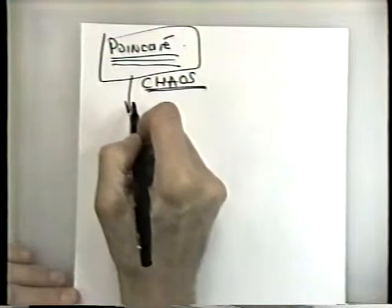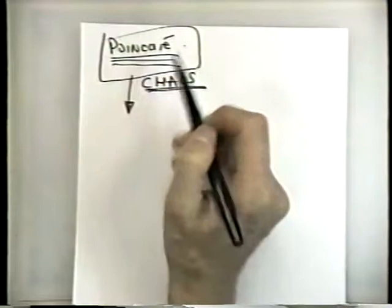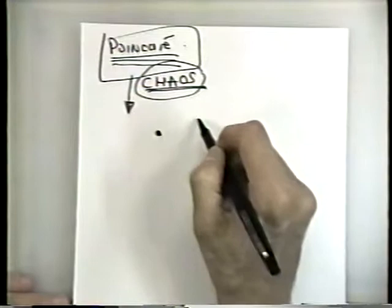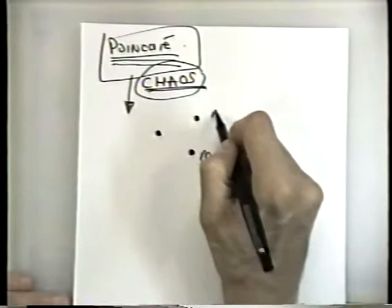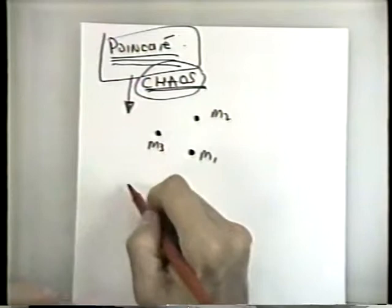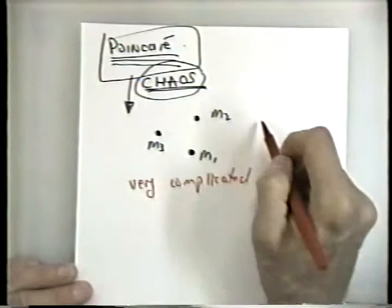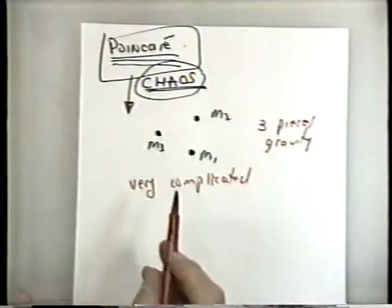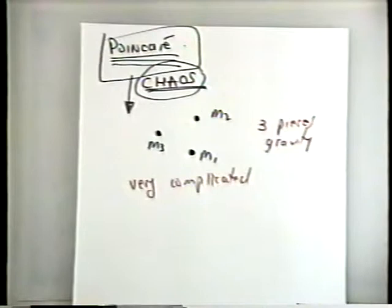What we're going to describe are some of the methods that Poincaré used to deal with this problem. Basically, the result was that if you have three interacting gravitational bodies — three different masses that interact by gravity — this system is very complicated. Poincaré discovered that with only three pieces and gravity interacting between them, under certain circumstances you can't predict what's going to happen with this system.